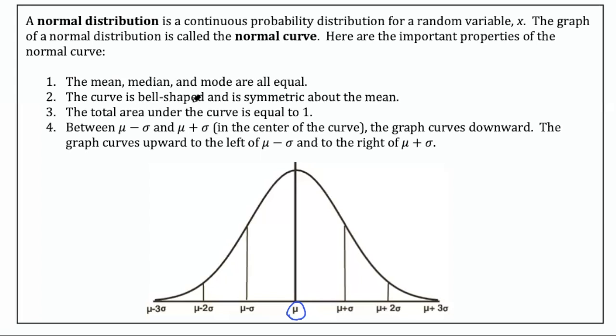Number two, the curve is going to be bell-shaped and is symmetric about the mean. So in other words, at the mean, we have a line of symmetry for this shape, where one half is the mirror image of the other. The total area under the curve will always be equal to one. And between the mean minus one standard deviation and the mean plus one standard deviation, you'll notice the curve here is curving downwards. But then once you get to that first standard deviation beyond the mean, then you'll notice the curve starts turning upwards, both on the left end and on the right.